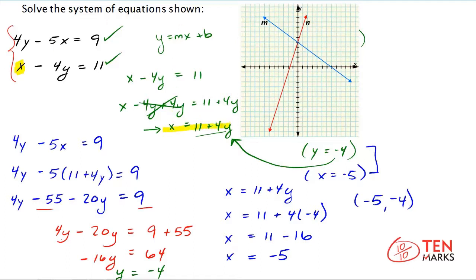And that's what I did here in this first step. And to do that I looked for a variable that had a coefficient of either 1 or negative 1. And we saw why that was helpful.